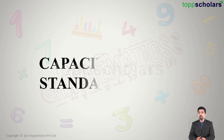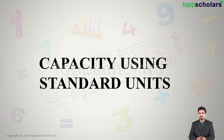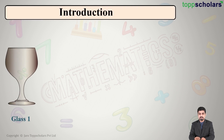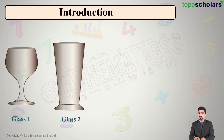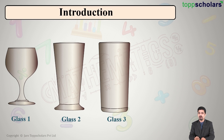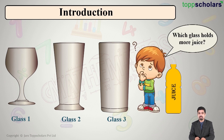Hello students, welcome to Top Scholars. Today we are going to study capacity using standard units. We have a first glass, then a second glass, then one more glass, and a bottle of juice. What I want to understand is which glass will hold more quantity of juice — but how do I measure the quantity each glass can hold?